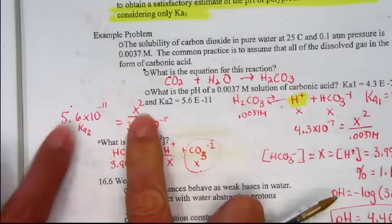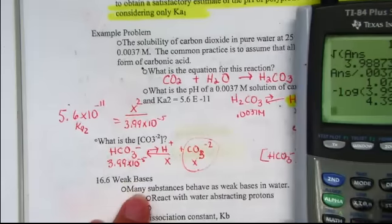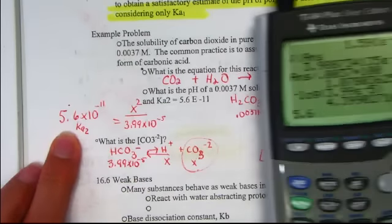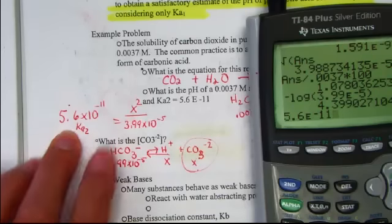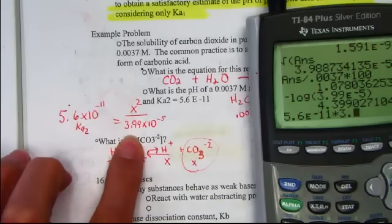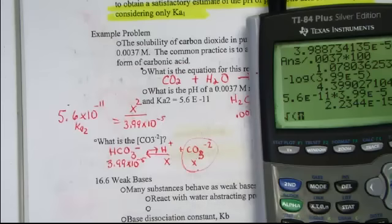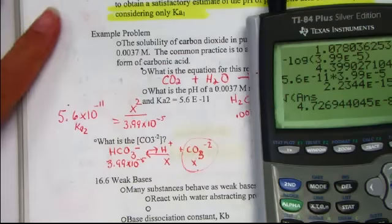Cross multiply, square root, and we'll have our concentration of the remaining carbonate ion. The Ka2 value of 5.6 E-11 times 3.99 E-5, square root our answer, and we find 4.73 times 10 to the negative eighth.